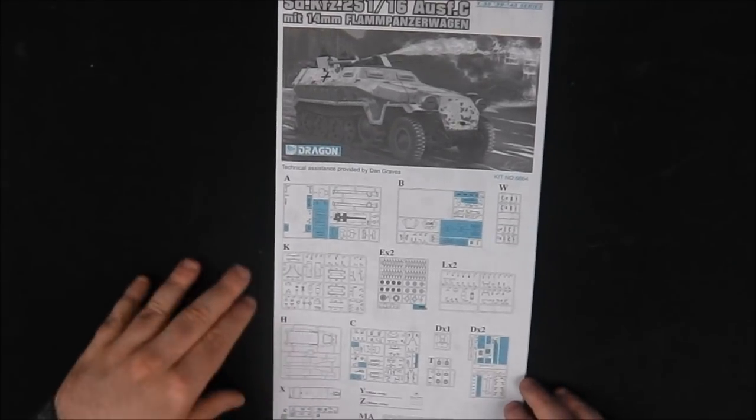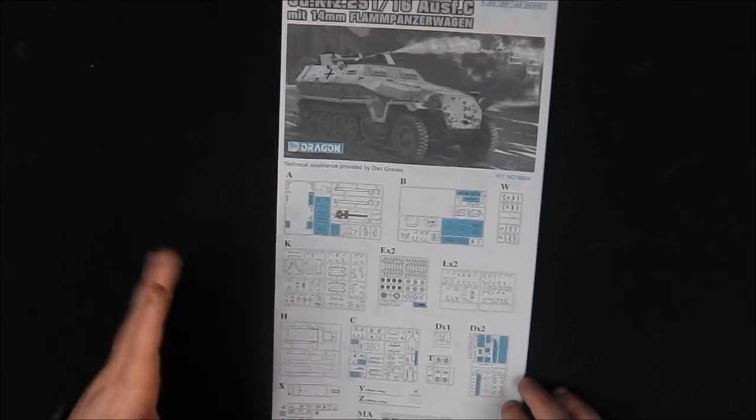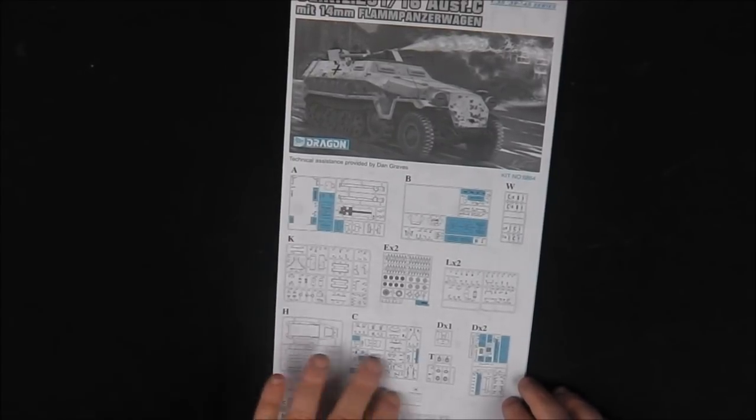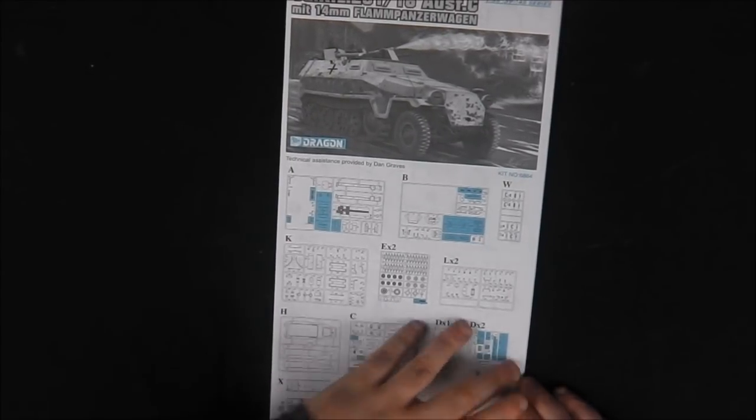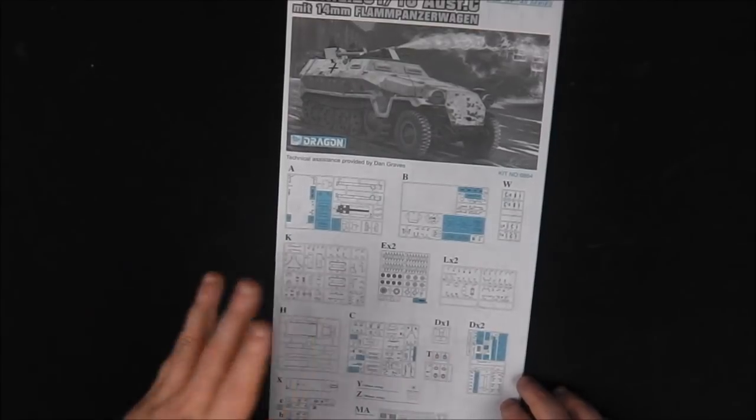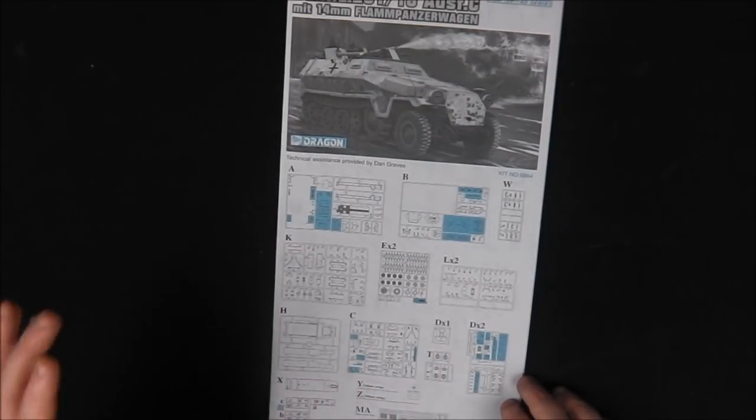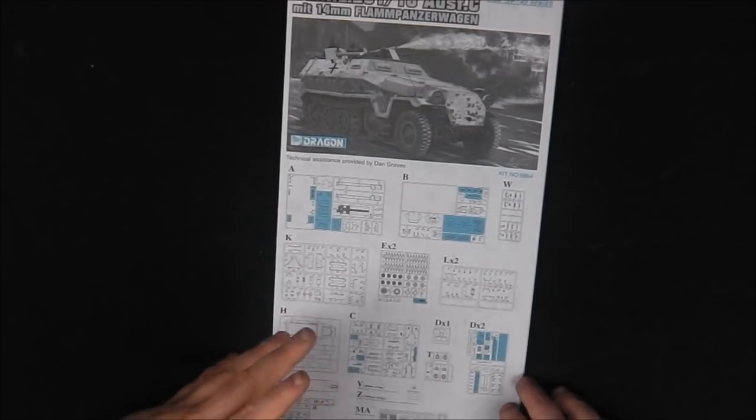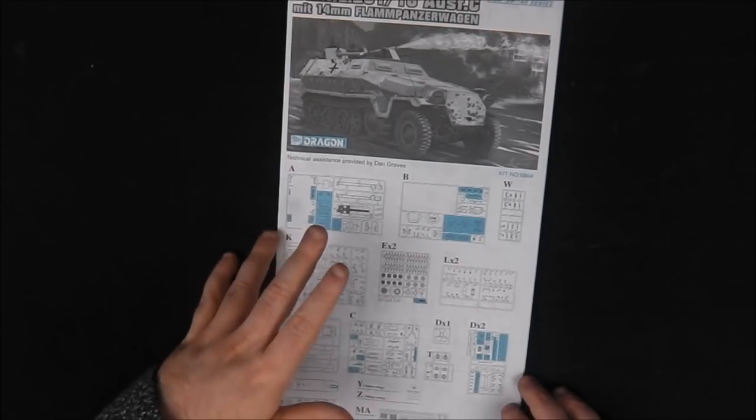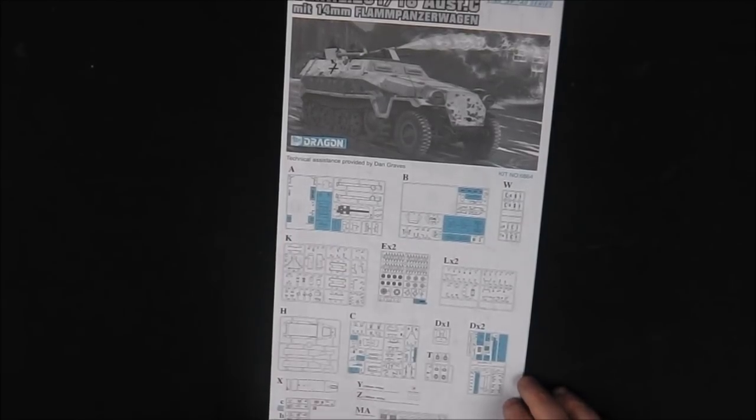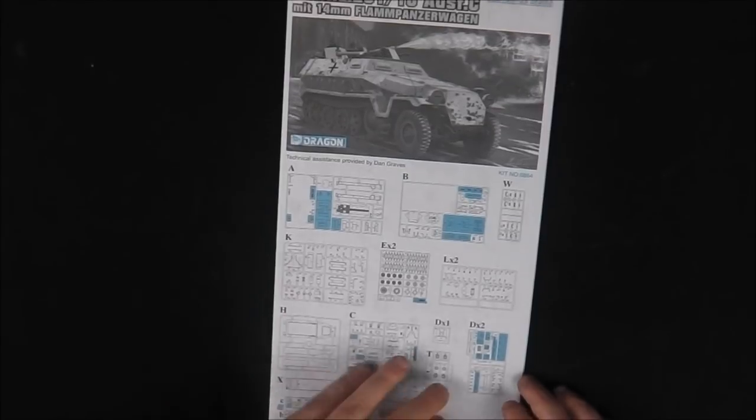Starting with the instructions as always, we get a very standard Dragon style pamphlet. We get our sprue map with the obligatory blue do-not-use parts. You can throw those into your spare bin. There's going to be a lot of parts we're not going to use from the normal troop carrier, which is going to be replaced with different types of pumps and projecting systems for the flamethrowers.